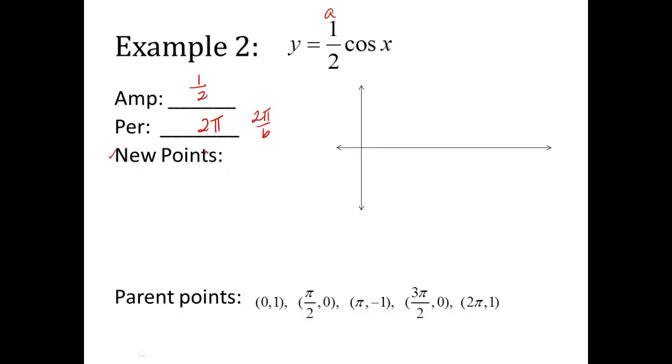The new points, remember, it's the same for cosine as it is for sine. We're just going to multiply the y values times the amplitude. Okay? So down here I've listed your values for cosine, the parent points of cosine. So (0, 1/2), 1 times 1/2 is 1/2. (π/2, 0), 0 times 1/2 is 0. (π, -1/2), negative 1 times 1/2 is negative 1/2. (3π/2, 0), 0 times that is 0. And then lastly 2π, 1 times 1/2 is 1/2.